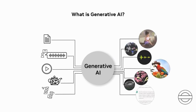These systems can generate diverse forms of content, including realistic images, videos, music, and even entire virtual environments, by learning from and synthesizing patterns in the input data. Its adaptability to diverse data types and applications underscores its potential to transform multiple industries and augment human capabilities across a wide spectrum of tasks.